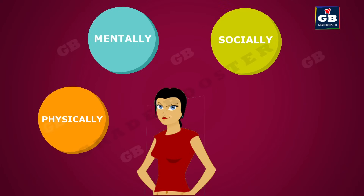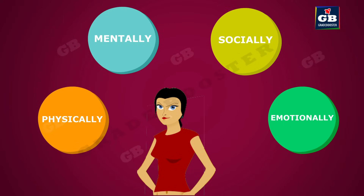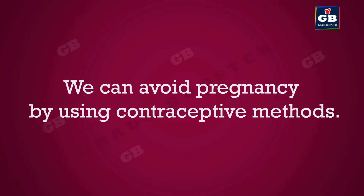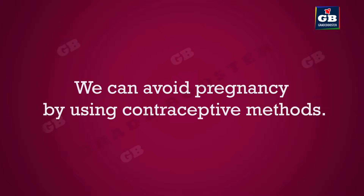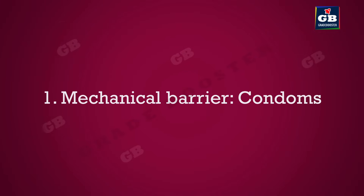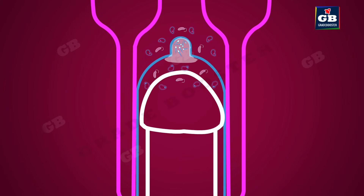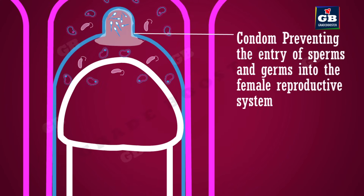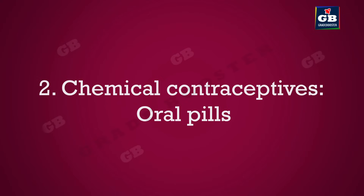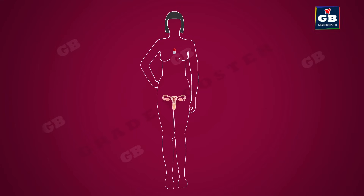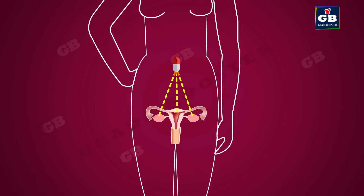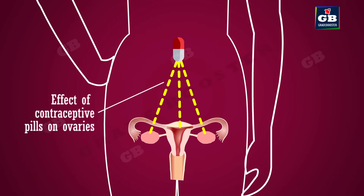A girl should be physically, mentally, socially, and emotionally ready before becoming pregnant; otherwise, her health will be adversely affected. Pregnancy can be avoided using contraceptive methods. One: mechanical barriers — condoms act as a barrier and prevent the entry of sperms into the female reproductive system. Two: chemical contraceptives — oral pills change the hormonal balance of the woman and stop the release of egg and fertilization, but changing hormonal balance leads to many side effects.